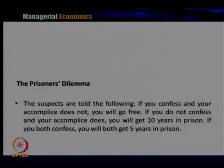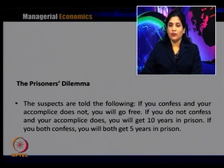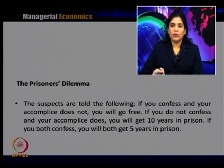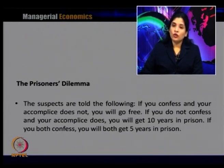The suspects are given information from the authority: if you confess and your accomplice does not, you will go free; if you do not confess but your accomplice does, you will get 10 years in prison; if both of you confess, you will both get 5 years in prison. These are the options given to the suspects — confessing leads to going free only if the other does not confess.